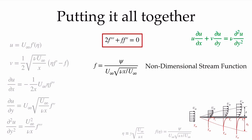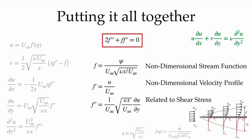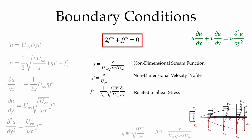Let's remember what we have. f is our non-dimensional stream function. f-prime is our non-dimensional velocity profile, so when we solve this and know f-prime, we'll have the u-velocity profiles. f-double-prime is the derivative of the velocity profile, which is related to du/dy and therefore to the shear stress in the flow — we can use that to calculate the skin friction coefficient. Now that we have our equation, we need boundary conditions to solve it.